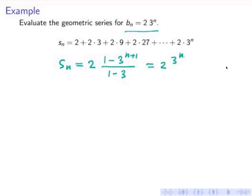So then this is 3 to the n plus 1 minus 1 divided by 3 minus 1. I multiplied by minus 1 on the numerator and denominator. But then 3 minus 1 is 2 and there's a 2 in front, so they cancel. This becomes 3 to the n plus 1 minus 1.